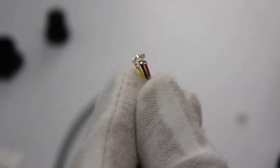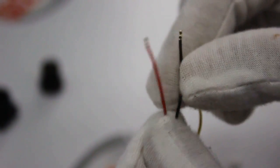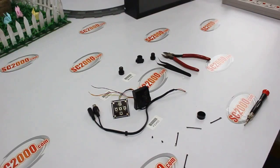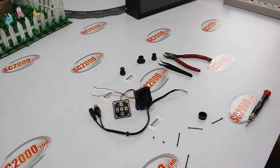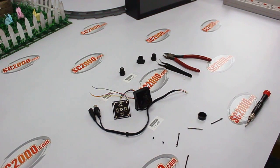Now we can see three wires. Yellow one is for video cable, the red one is for power, and black one is GND cable. That's how to mount the camera housing for PZ0420.